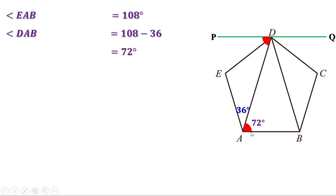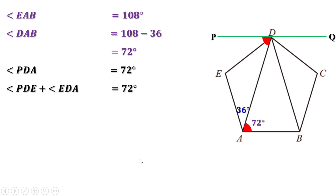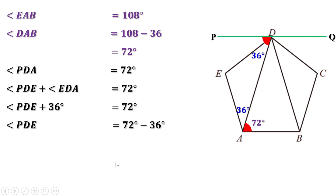Since angle PDA is 72 degrees, it is divided into two parts: angle PDE and angle EDA. Therefore, angle PDE plus angle EDA equals 72 degrees. We have already seen that angle EDA is 36 degrees. Therefore, angle PDE plus 36 equals 72 degrees. So, angle PDE equals 72 minus 36, or 36 degrees.